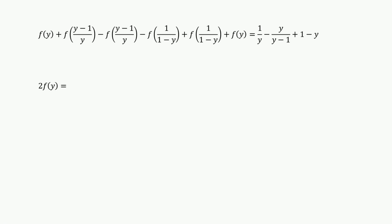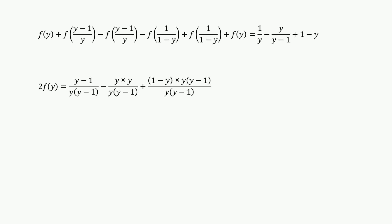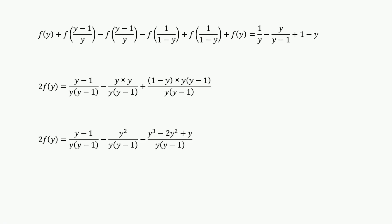From the right-hand side, we need equal numerators to perform addition and subtraction. Then we have 2 f of y equals (y minus 1) over y(y minus 1) minus y squared over y(y minus 1) plus (1 minus y) times y(y minus 1) over y(y minus 1). Expanding the right-hand side, we get y minus 1 minus y squared minus y plus 2y squared minus y over y(y minus 1).